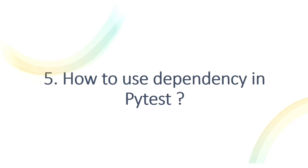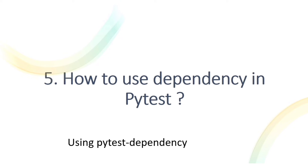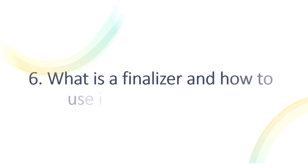The next question: how to use dependency in pytest? If test method one is dependent on test method two, then test method one will run only after test method two has passed. If test method two fails, test method one will be skipped. We can achieve this using the pytest-dependency marker. A separate video on this feature is linked in the description.